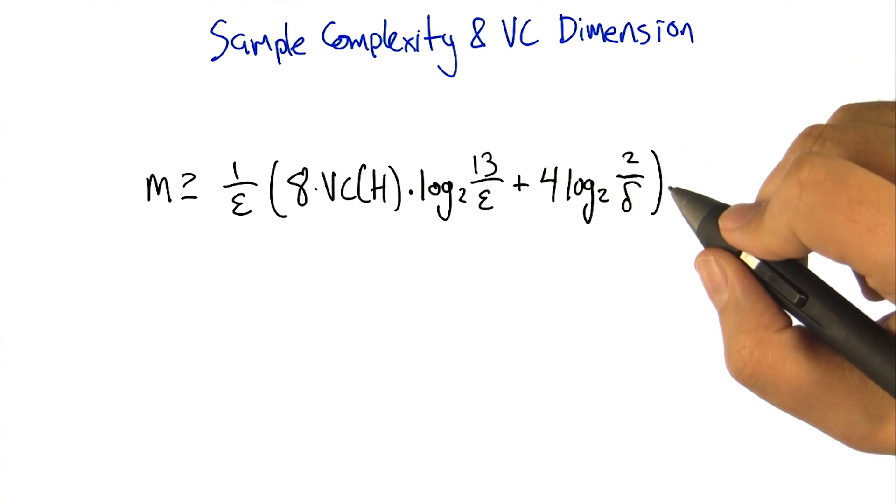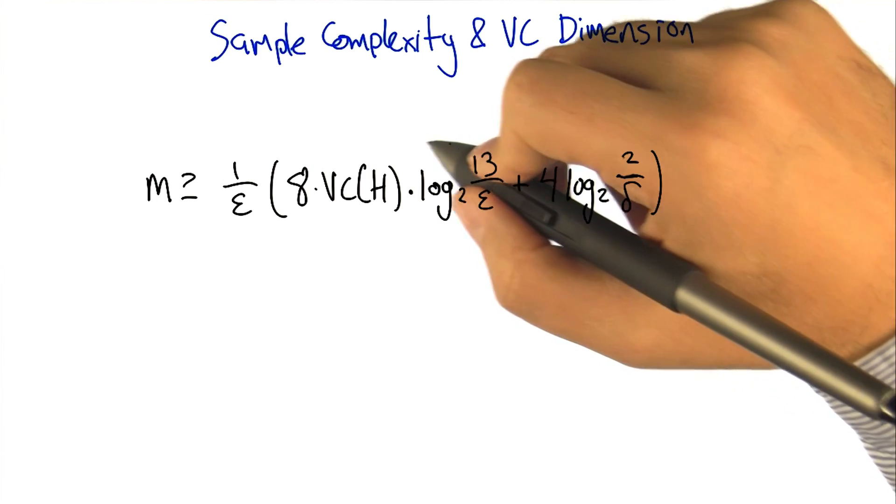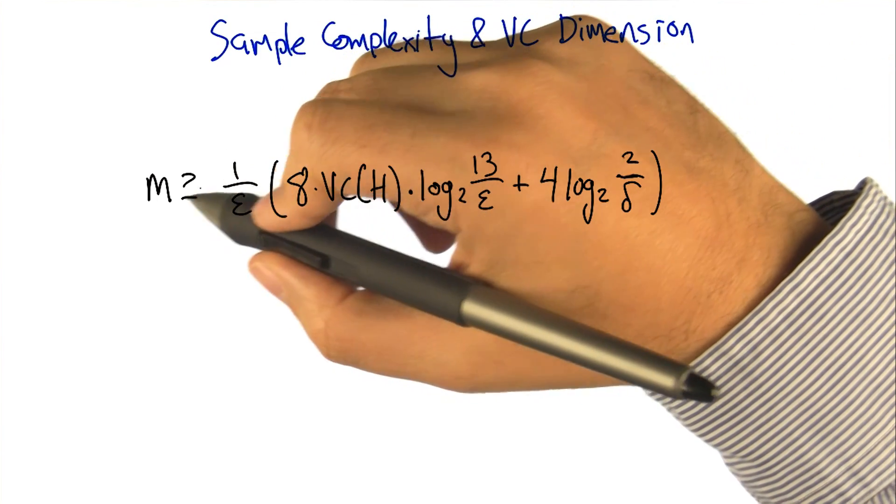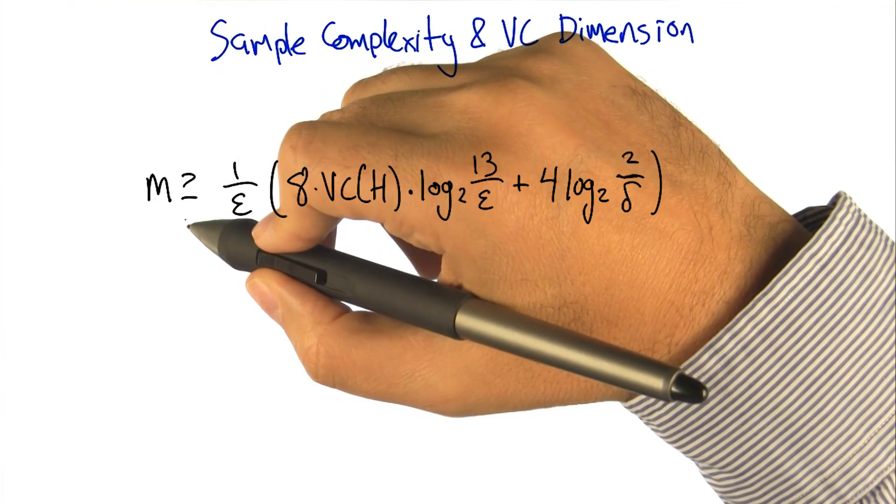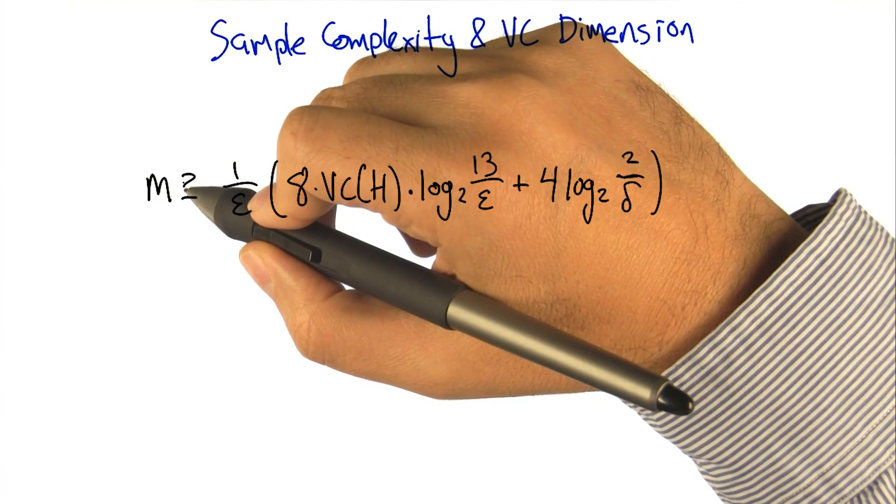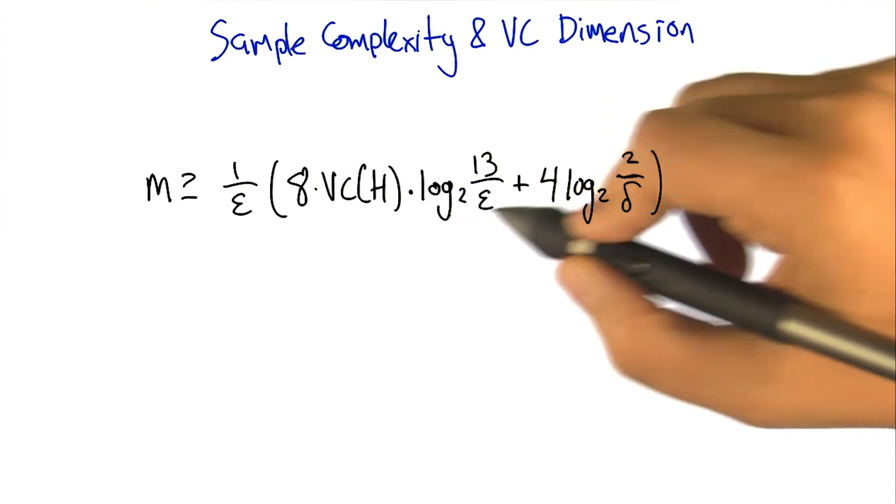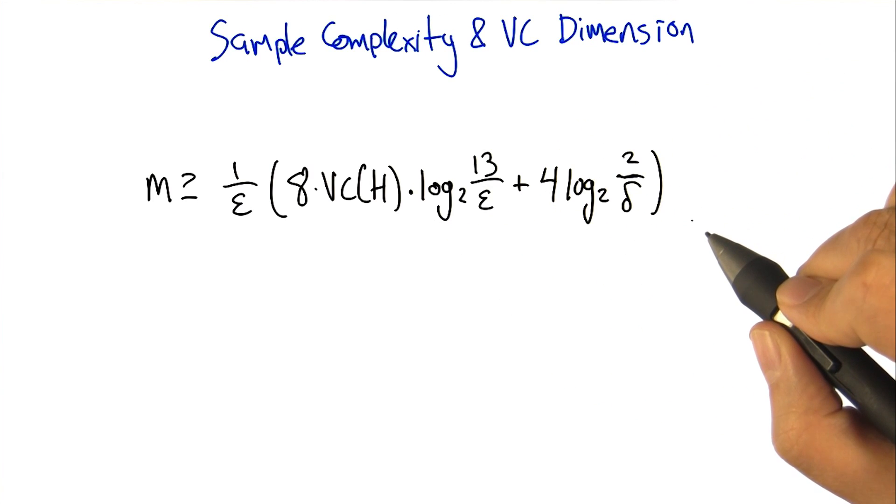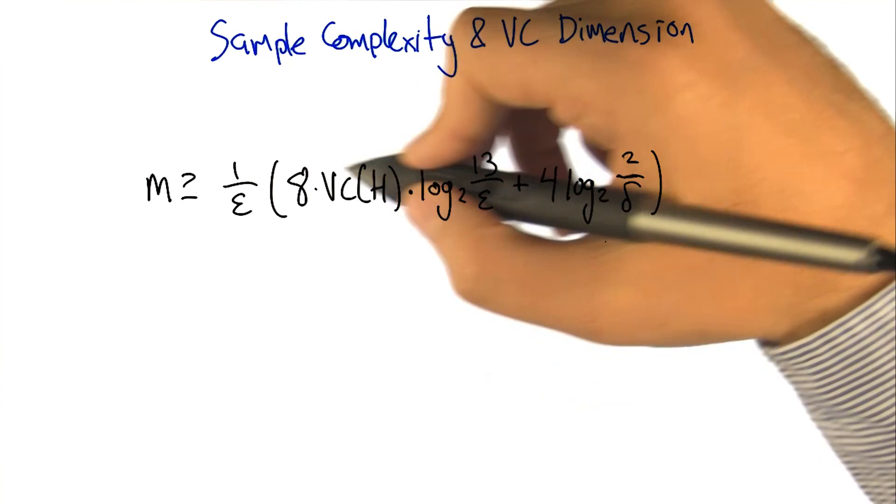And so here is the equation that you get when you connect these things up. It turns out that if you have a sample set, the size of your training data is at least as big as this expression here, then that will be sufficient to get epsilon error or less with probability 1 minus delta.